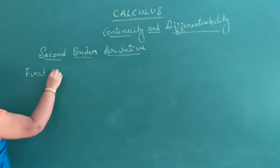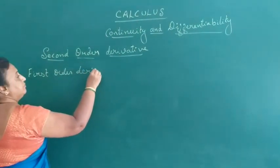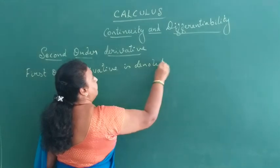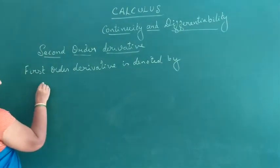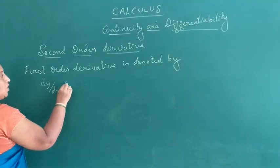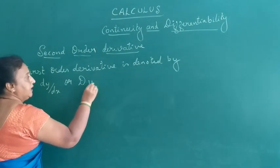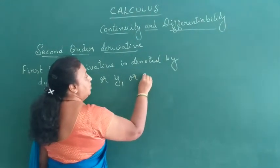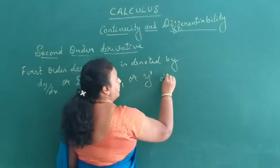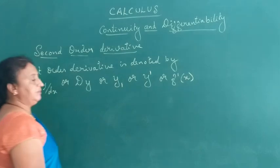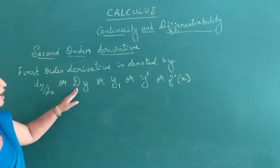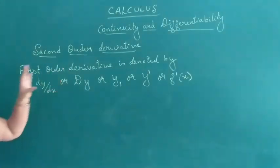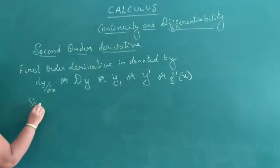The first order derivative is denoted by dy/dx, or Dy, or y₁, or y′, or f′(x). These all denote the first order derivative.